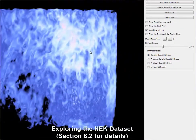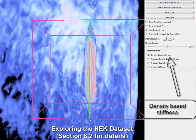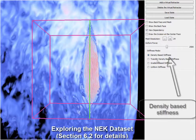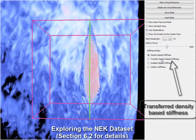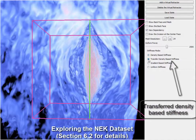Now we show an example of exploring the neck dataset. To open up the dataset, we add a virtual retractor using density-based stiffness. Then we change to the transfer density-based stiffness as described in section 6.2.